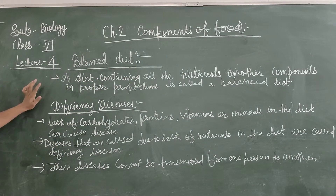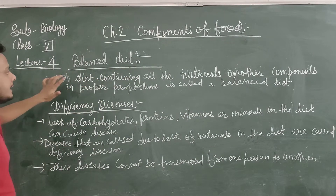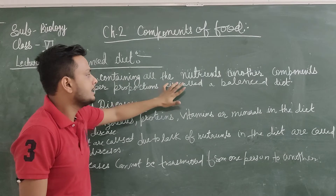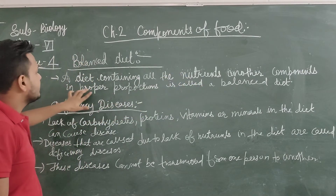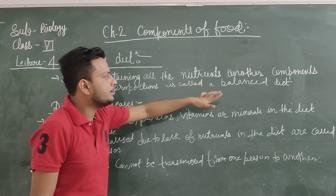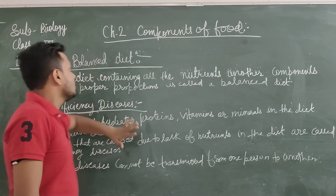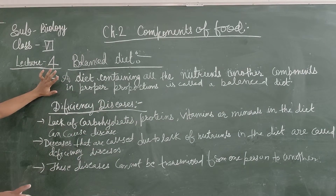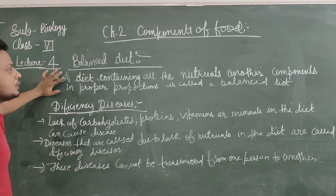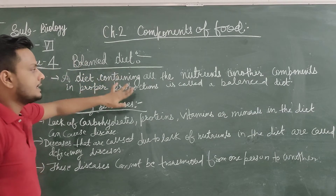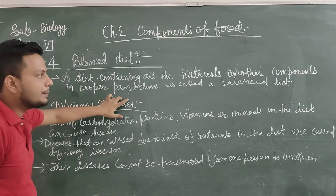What is the balanced diet? A diet containing all the nutrients and other components in a proper proportion is called a balanced diet. It is a diet in which all nutrients are present in the proper amount.